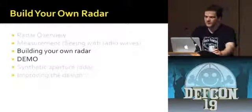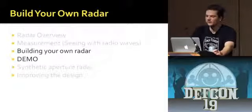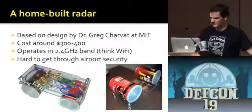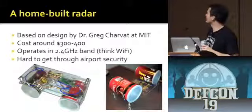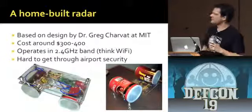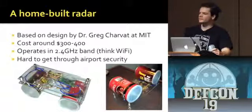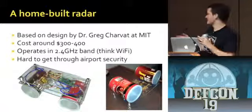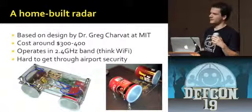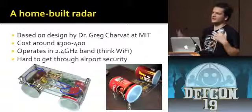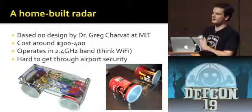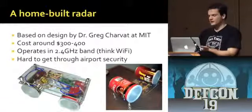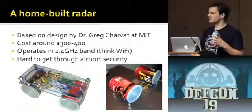The home-built radar I have here — if you want a good look at it, come to the Q&A room. The original design was by Greg Charvet, an employee at MIT. He designed this system to be built as an MIT class — basically a two-week-long class where you just learn how to build these things. The cost is a few hundred dollars. It operates in the Wi-Fi band at 2.4 gigahertz, and it's pretty simple to use.